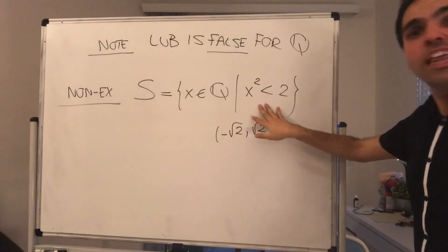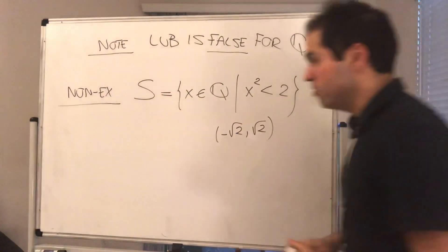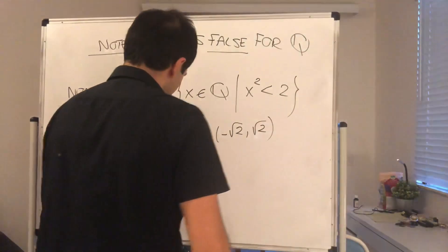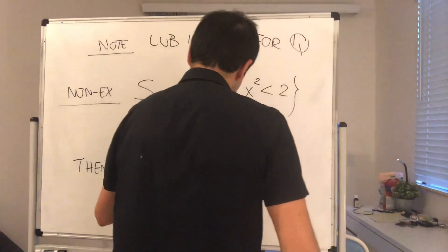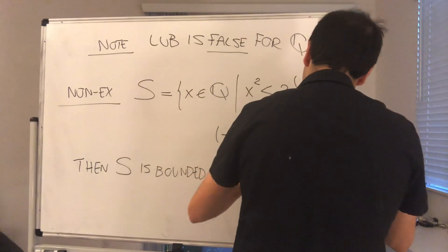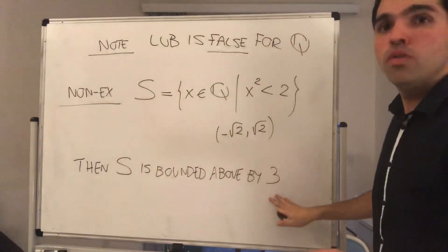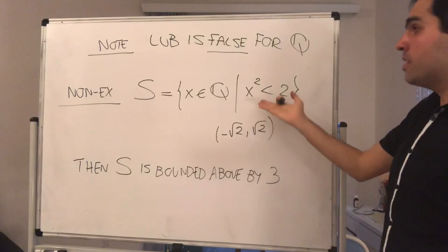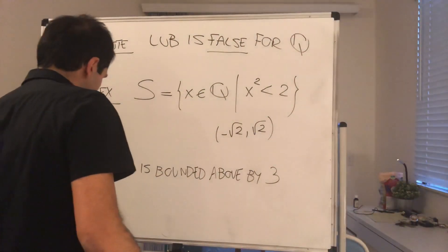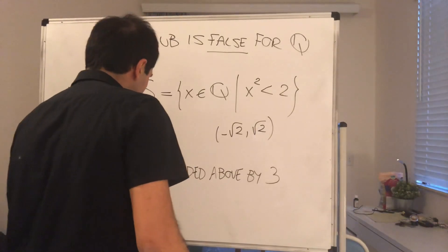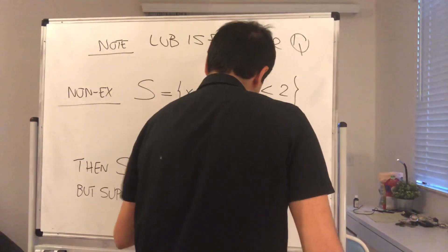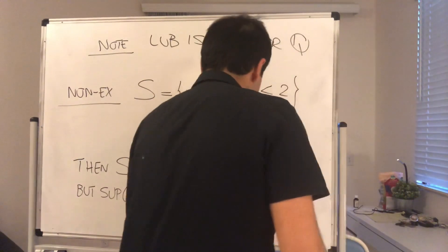Then, one can show that S is bounded above by 3. By 3, and I've done it in the notes, you just do it by the contrapositive, but it turns out S does not have a least upper bound. Now,